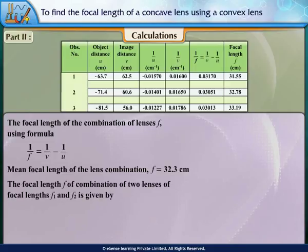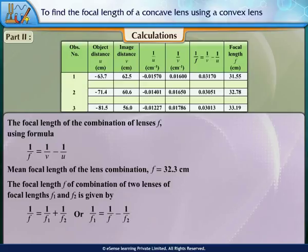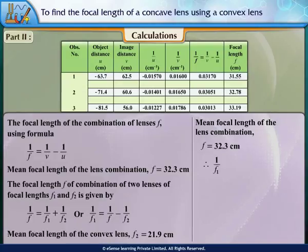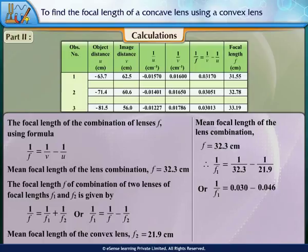The focal length F of the combination of two lenses of focal lengths F1 and F2 is given by 1/F = 1/F1 + 1/F2, or rearranged: 1/F1 = 1/F − 1/F2. With mean focal length of the combination F = 32.3 cm and F2 = 21.9 cm: 1/F1 = 1/32.3 − 1/21.9 = 0.030 − 0.046 = −0.016. Therefore, F1 = −62.5 cm.